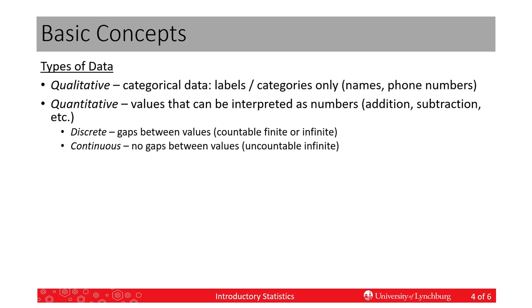There are two types of data: qualitative data and quantitative data. Qualitative data are simply categorical data — data that we can put into categories. They're identified by labels only. We can use names or numbers, but numbers that won't be added or subtracted, such as phone numbers or zip codes — it makes no sense to perform arithmetic on those. They are placeholders or labels and nothing else. Whereas in quantitative data, we do have numerical data and the values act like regular numbers — we can add, subtract, etc.